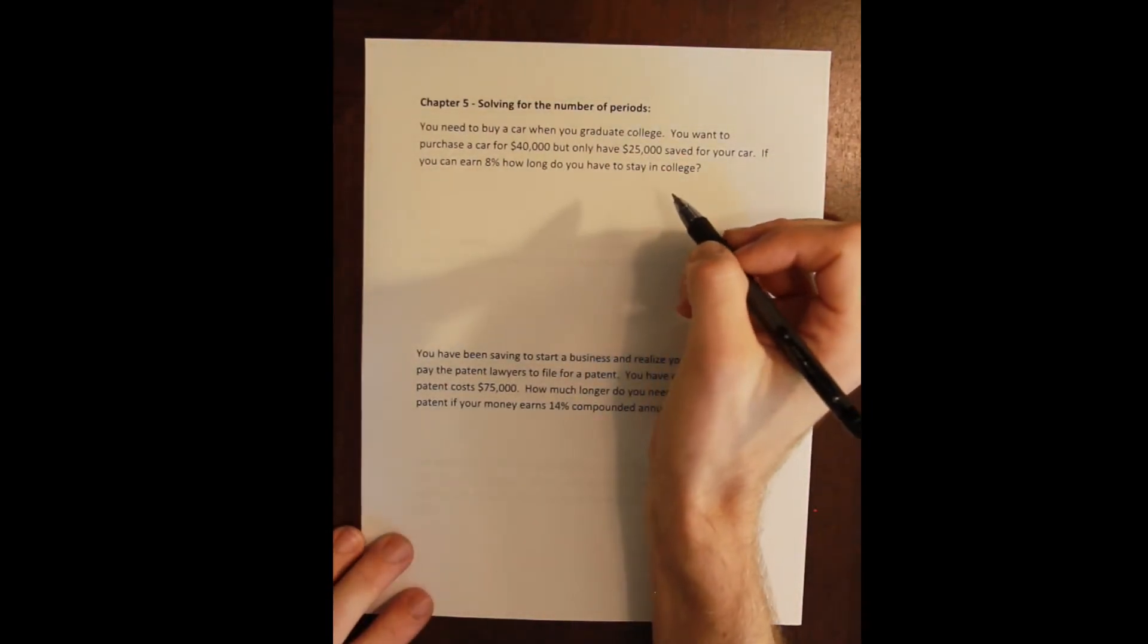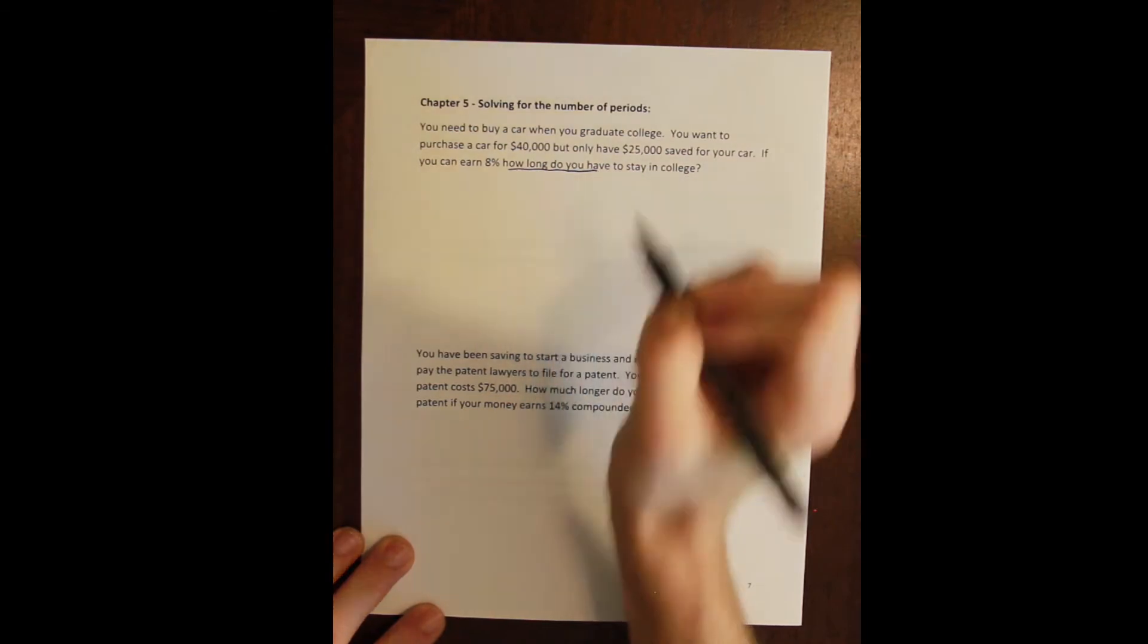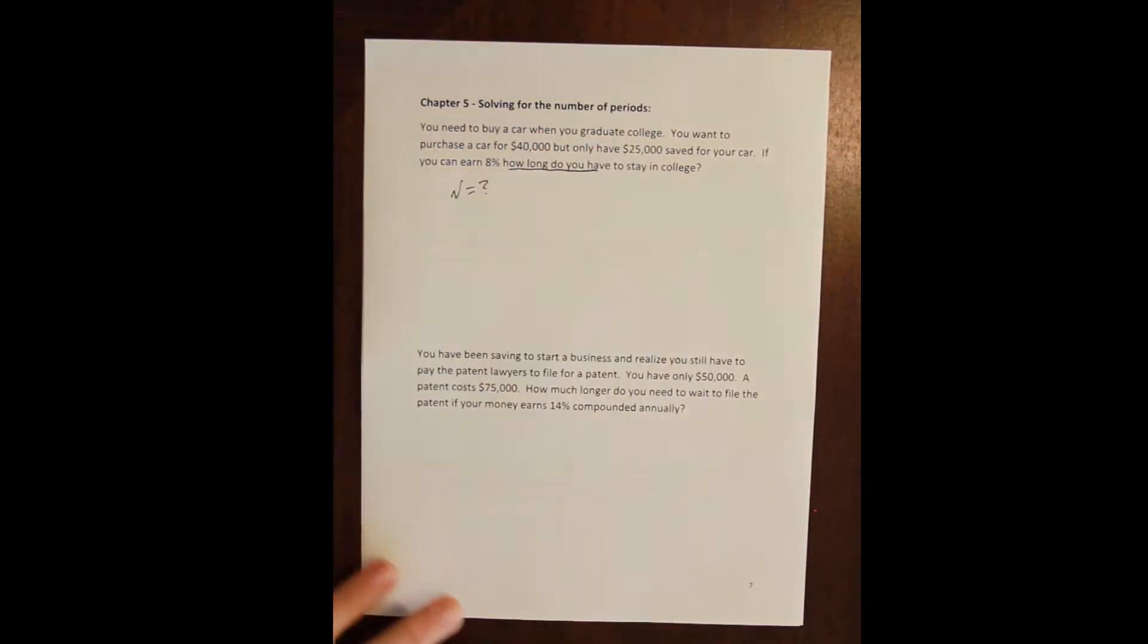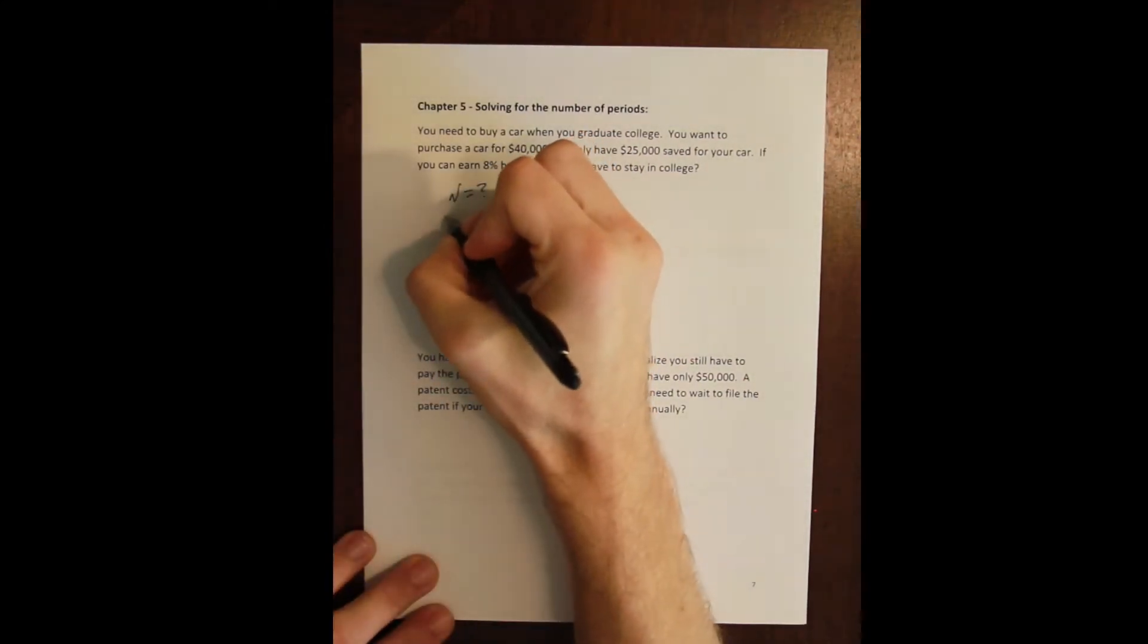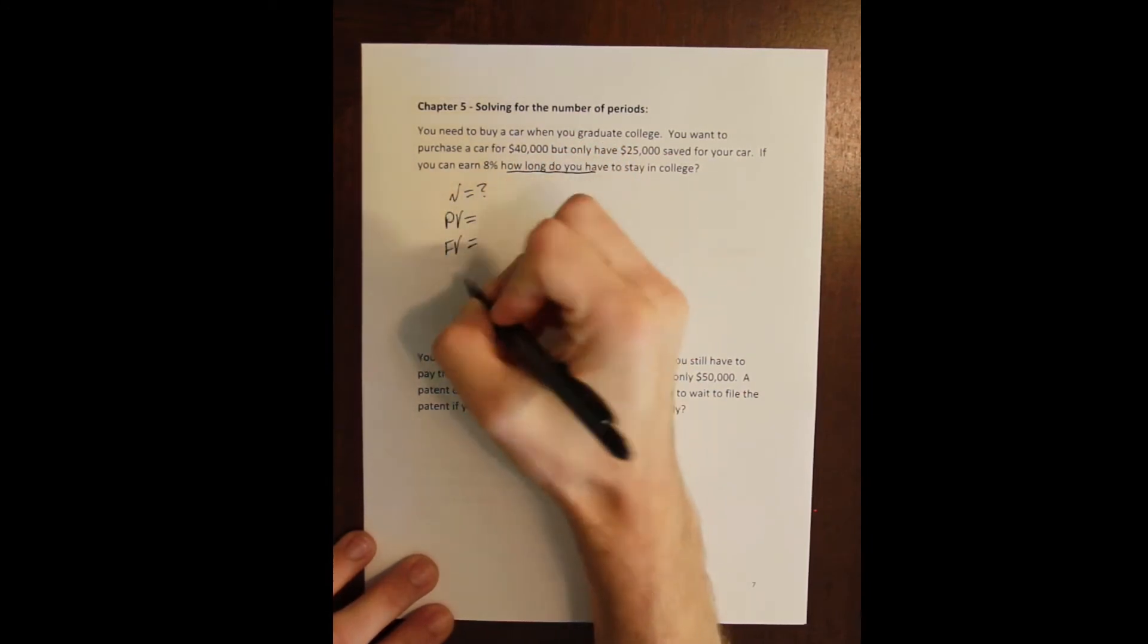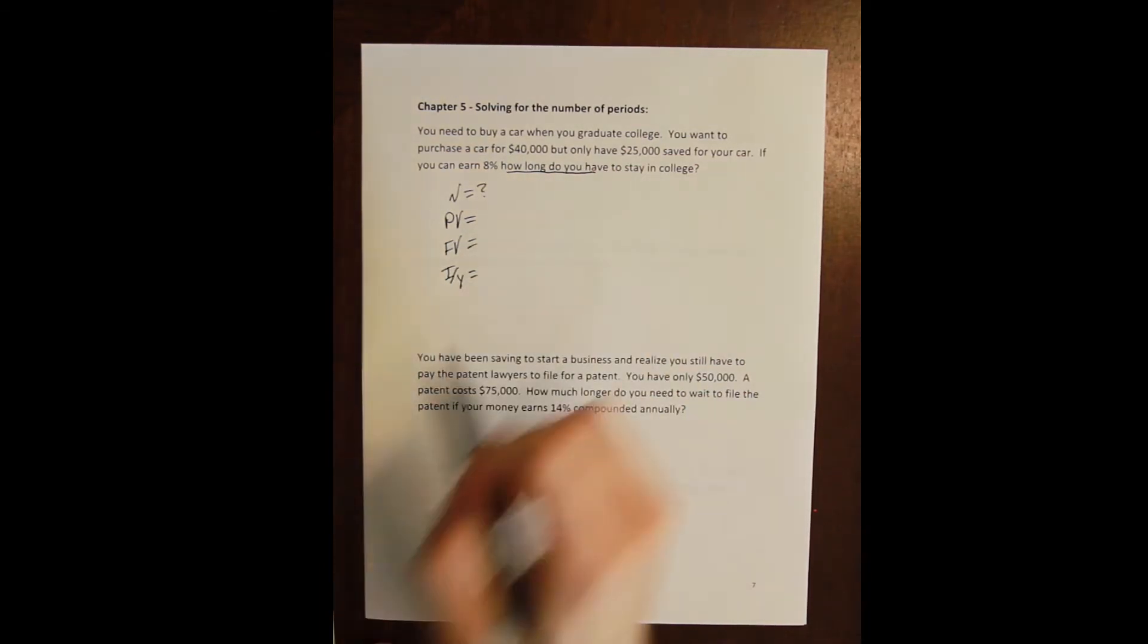So again this is usually a dead giveaway for problems because it'll say something like how long do you have to do something? Well that means how many periods do we need to wait for this investment to mature? And that means if we're solving for n, we need to know the present value, we need to know the future value, and we need to know the I/Y. So I can solve for any one of these four things as long as I know the other three, which is of course standard algebraic practice.